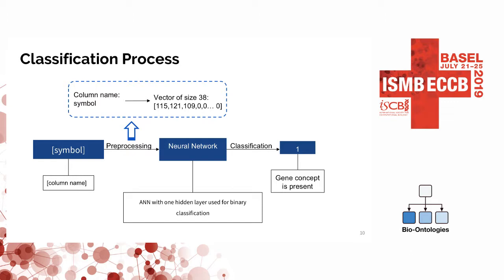This is an overview of the classification process. We start by taking a column name, preprocessing it into a vector of size 38 — because this was the biggest column name size we could find — and each of the characters from the name was transformed into its ASCII code, so that we get a numerical representation and can use it in a classification task. Then we plug this into an artificial neural network with only one hidden layer for binary classification, to see if the gene concept is present.